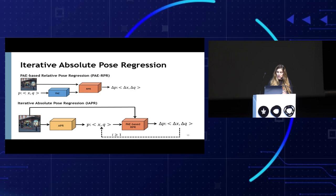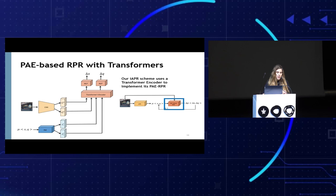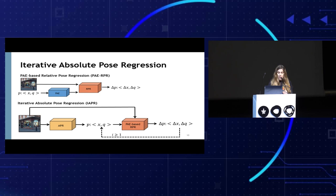We implement the PAE-based RPR with a transformer encoder. Given an image, we first apply a convolutional backbone, and then do the same on the pose estimate — on a pose reference. We take the resulting latent representations and aggregate them with a transformer encoder. Then we apply MLPs and regress the delta position and delta orientation, which feeds into the iterative loop and refines the initial APR estimate.